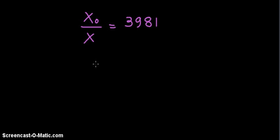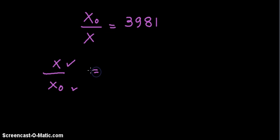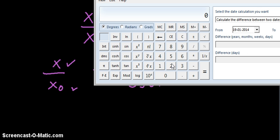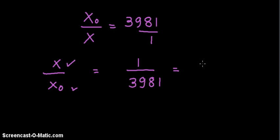However, since we have been asked to find the fraction of the remaining quantity — that is x upon x₀ — the remaining-to-initial ratio is equal to 1 upon 3981, since x₀/x is upon 1. Therefore x/x₀ equals 1 divided by 3981, which is equal to 2.5 into 10 raised to minus 4.